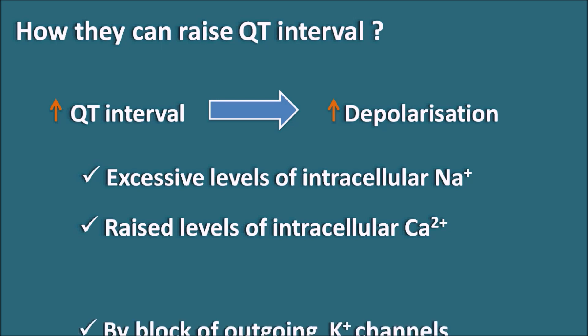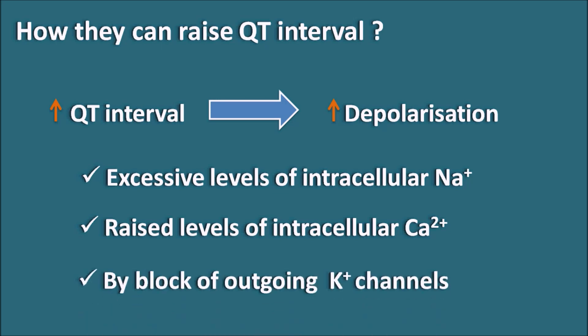Similarly, by blockade of the outgoing potassium channels — potassium is very important for the hyperpolarization of the cardiac membrane. With every action potential, after depolarization, hyperpolarization is mediated by outgoing potassium channels. When these potassium channels are not working properly, hyperpolarization will not take place in time. Thereby, the depolarization phase is increased within the cardiac membrane, which may result in the increase in the QT interval within the ECG.